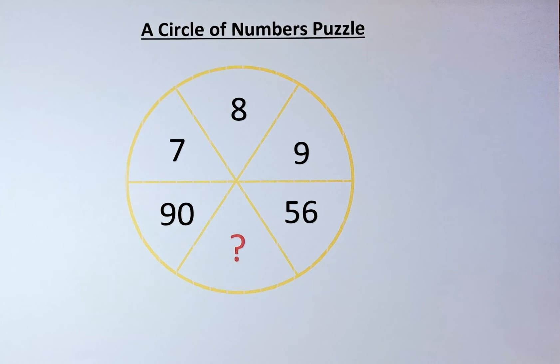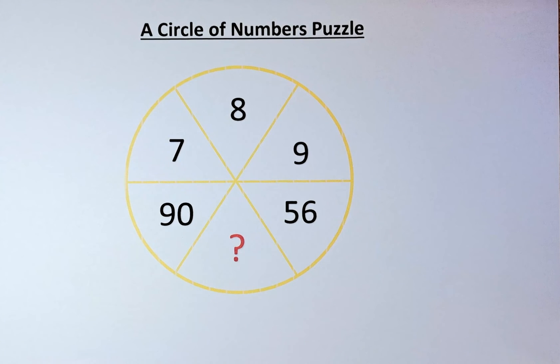The numbers in the circles are 90, 7, 8, 9, 56, and the question mark. We are going to find out what number the question mark represents. If you look at this type of question, you know that they are diagonally opposite.